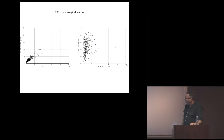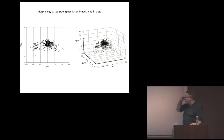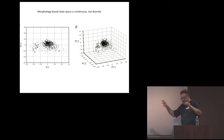Amy wrote software to extract morphological features from these different structures, ending up with 205 different features — things like how round is the nucleus, how densely packed are the mitochondria, and so on. You can look at individual pairs of features and ask which ones are correlated. Then using principal components analysis to reduce dimensionality, the result is that most of the variance is encoded in three principal components. Again, you don't see discretely separated clusters in this morphological state space — instead, you see a smooth continuous region where the cells fill out that region.